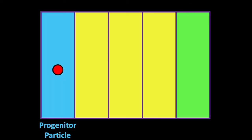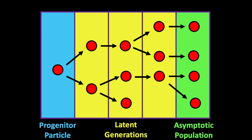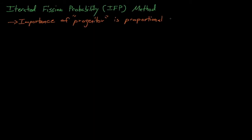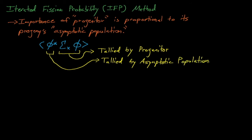The premise of the Iterated Fission Probability method is that the importance of a single particle traveling in some region of phase space is directly proportional to the population of neutrons that it creates many generations after this particle ceases to be. This originating particle is known as the progenitor, and the number of progeny or descendants that it creates is known as its asymptotic population. In practice, we can't afford to wait an infinite number of generations to know a particle's importance, and so we wait for a finite number of latent generations after which the progenitor's asymptotic population is approximately equal to its true asymptotic population. The reaction rates needed in the first order perturbation equation are tallied by the progenitor particle, and the asymptotic population provides an estimate for the importance of these tallies — thus we have exactly what we need to estimate sensitivity coefficients.